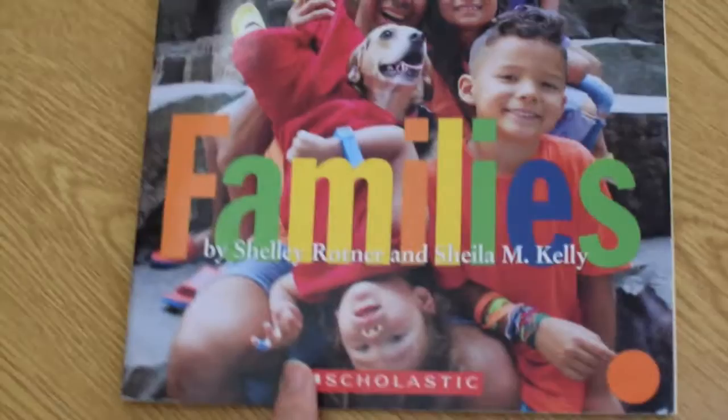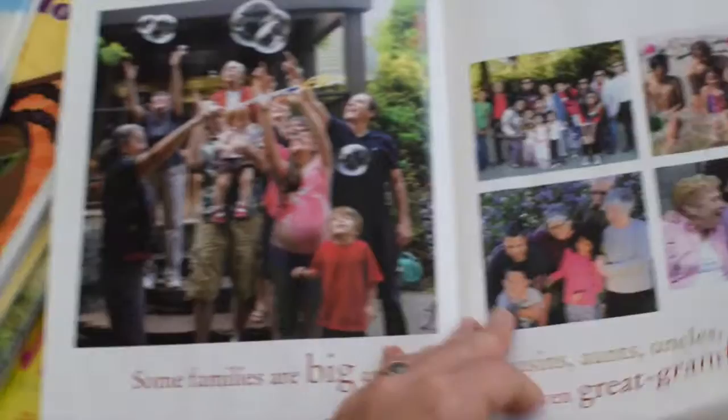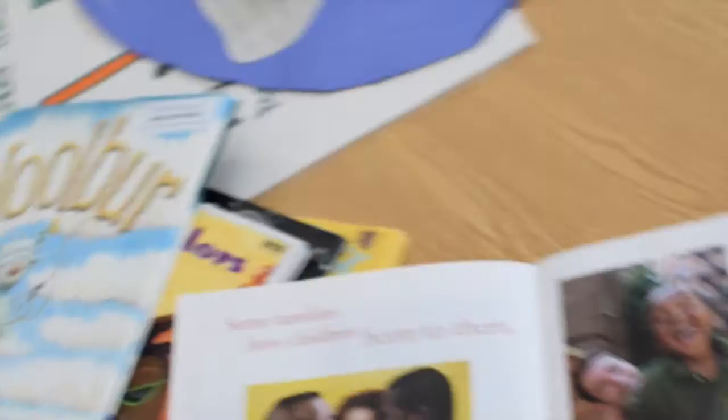I always like to read something about families and how all families are different and all families are alike in different ways. This was a decent one that I got from Scholastic last year. I like it because it has photographs. It's just very straightforward, easy, quick read, but it brings in the idea that there are all kinds of families. Families look different. They could be big, they can be small. Sometimes people and families look alike and sometimes they don't. Sometimes families have children born to them, some adopt. Kids will say, oh I know what that means, or what is that? And we might talk about what is adoption.